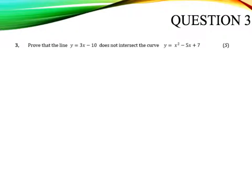So question 3 says, prove that the line y equals 3x minus 10 does not intersect the curve y equals x squared minus 5x plus 7. And this is a 5 mark question. There's nothing else in here, there's no other clues, there's no steps, it's just a single 5 mark question.